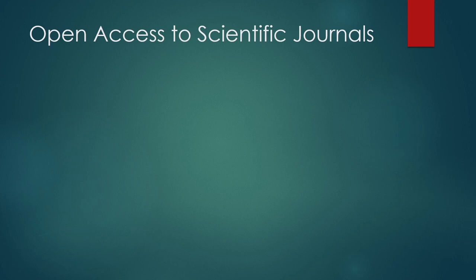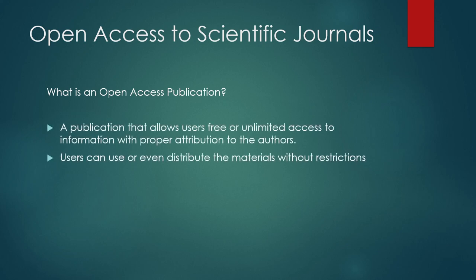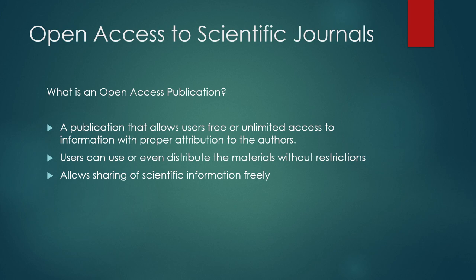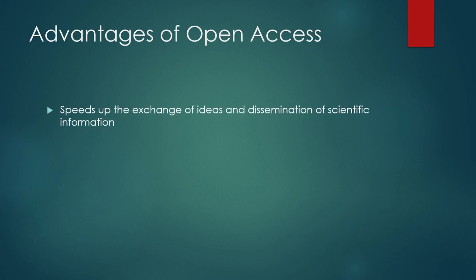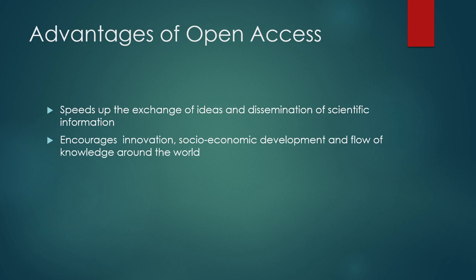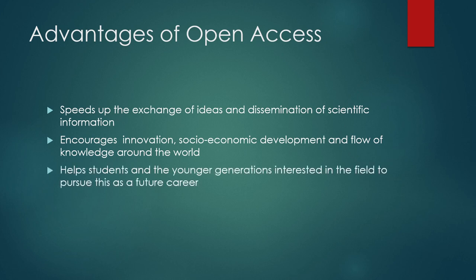Let's first define open access or open access publication. This type of publication allows free or unlimited access for users with proper attribution to the authors. It is not only beneficial for people in information sharing or dissemination, but also for scientists and authors as a venue to collaborate. Open access helps speed up the exchange of ideas and dissemination of scientific information. It can also encourage innovation, socioeconomic development, and flow of knowledge around the world, and serve as an instrument in the continuous growth of sciences globally while educating many people.